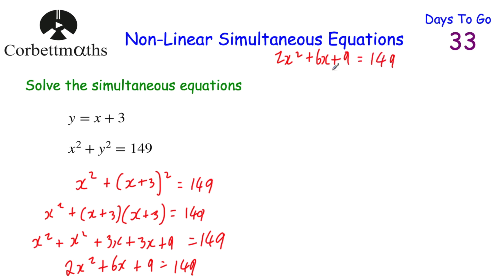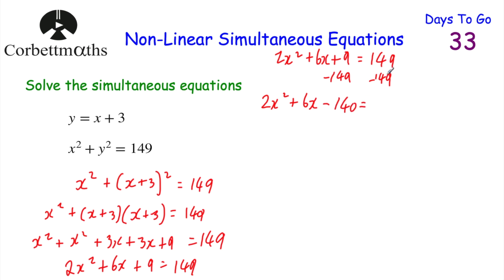Now let's solve this to find our values for x. I'm going to get it to equal 0, so I subtract 149 from both sides. The left-hand side becomes 2x squared plus 6x, and 9 take away 149 is minus 140, equals 0. We can divide everything by 2, so we get x squared plus 3x minus 70 equals 0.